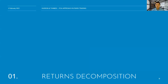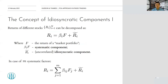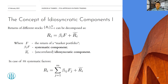Let's go to returns decomposition and introduce the concept of idiosyncratic components. Say we have a series of N stocks — the returns of those stocks can be decomposed into a systematic component and an uncorrelated idiosyncratic component, basically regressing one on the other. There can actually be M systematic factors, and you can decompose returns into M systematic factors plus the idiosyncratic component, which is unrelated to those factors.